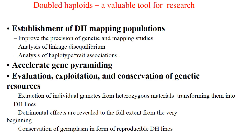Coming to double haploid in maize — this includes production, how double haploids will be helpful in maize, and different practices including advantages and disadvantages. It is a valuable tool in maize research: establishment of double haploid mapping populations, improving precision of genetic and mapping studies, analysis of linkage disequilibrium, analysis of haplotype or trait association, and accelerated gene pyramiding.